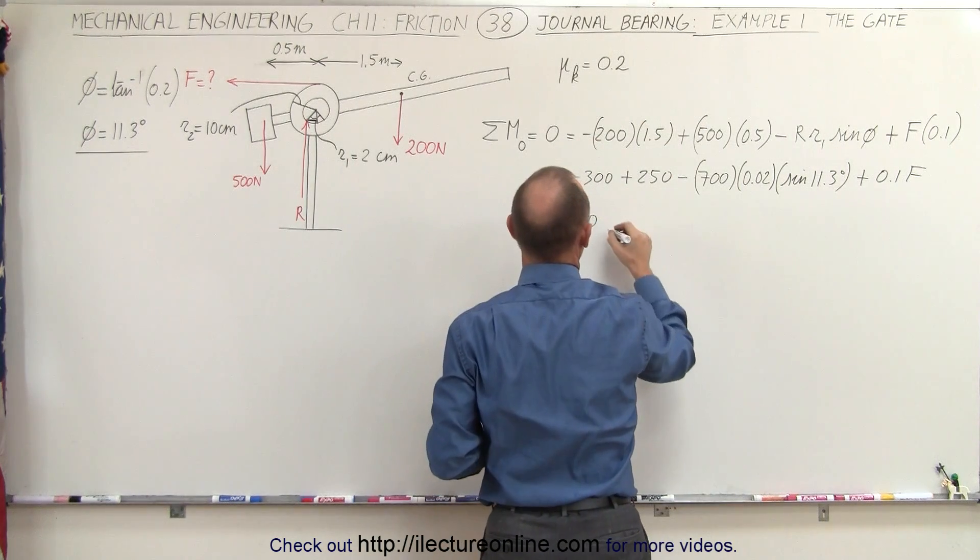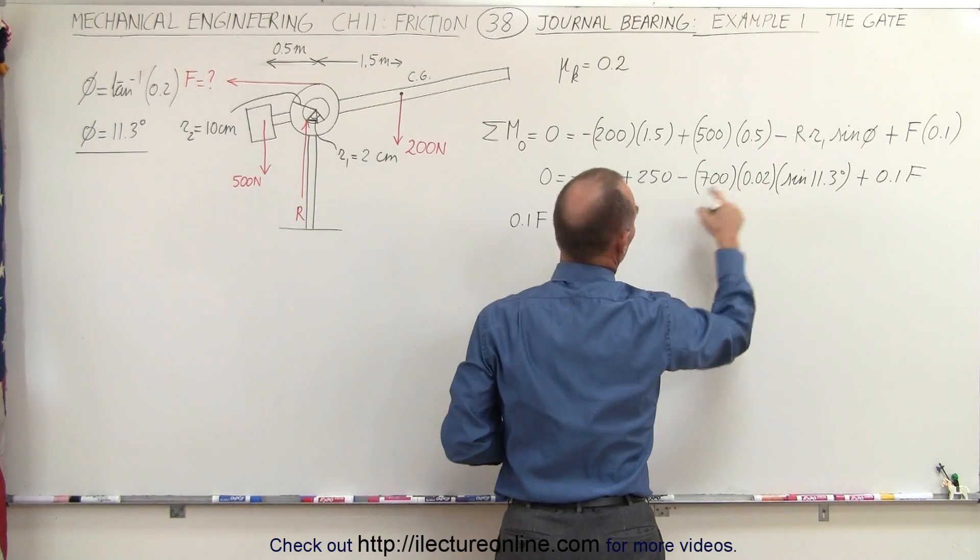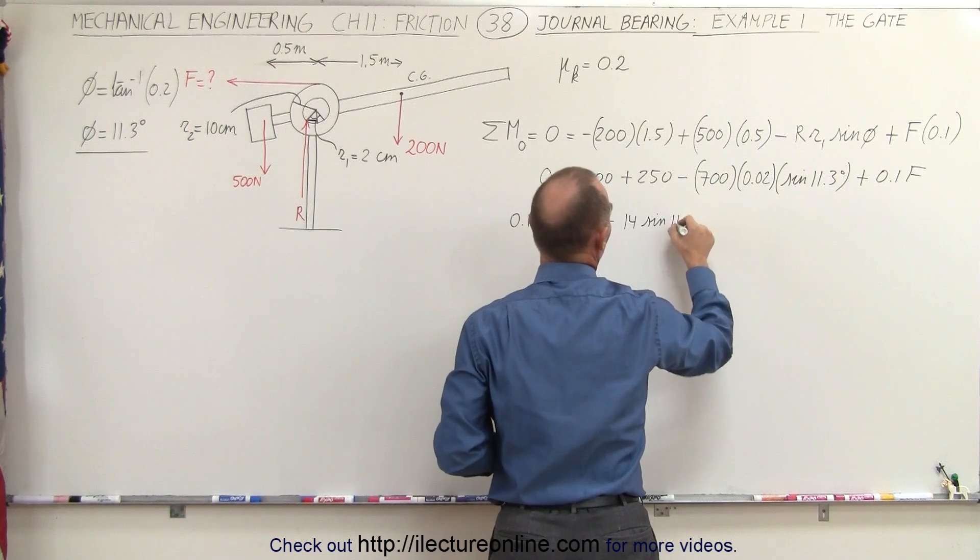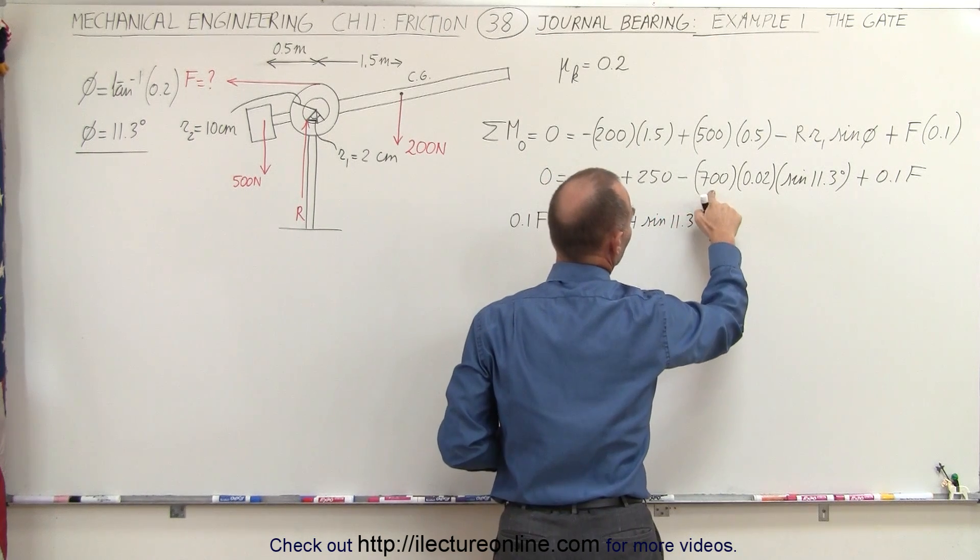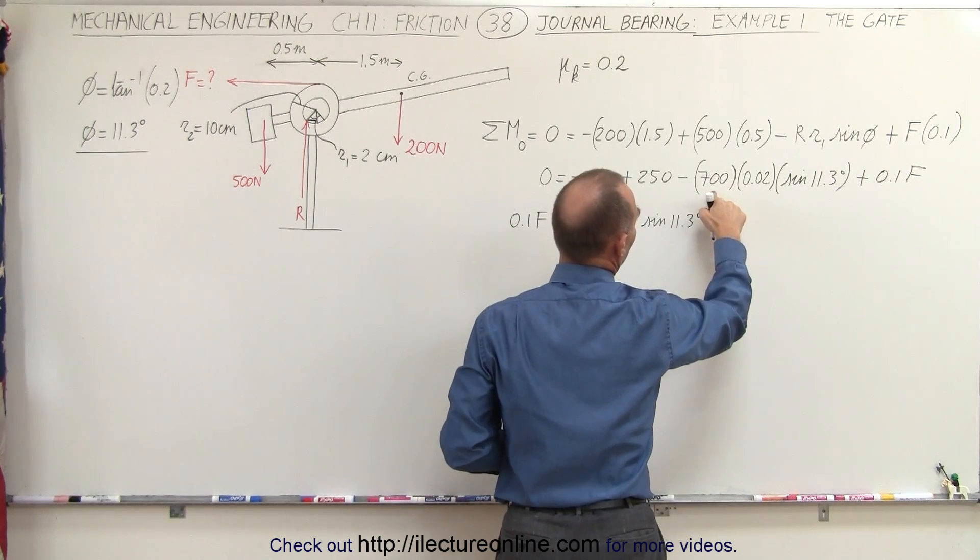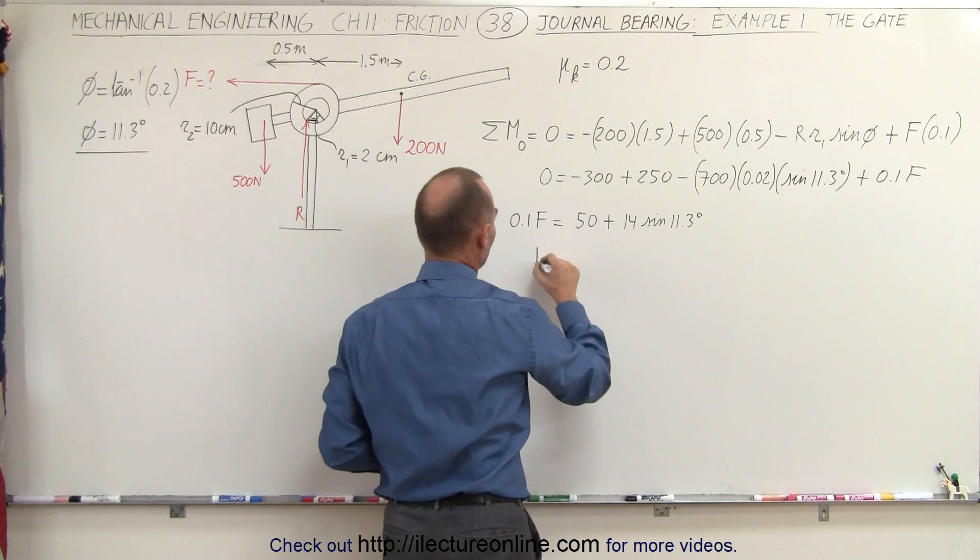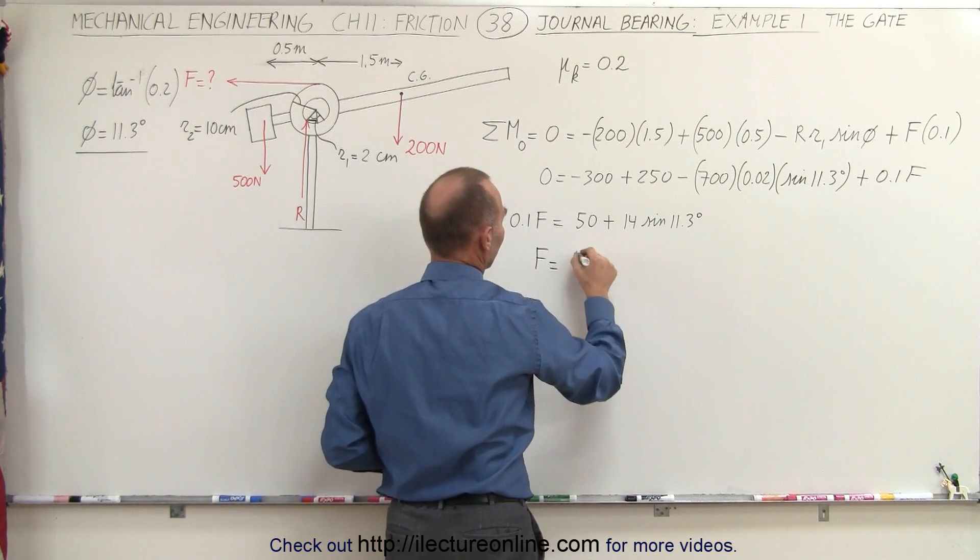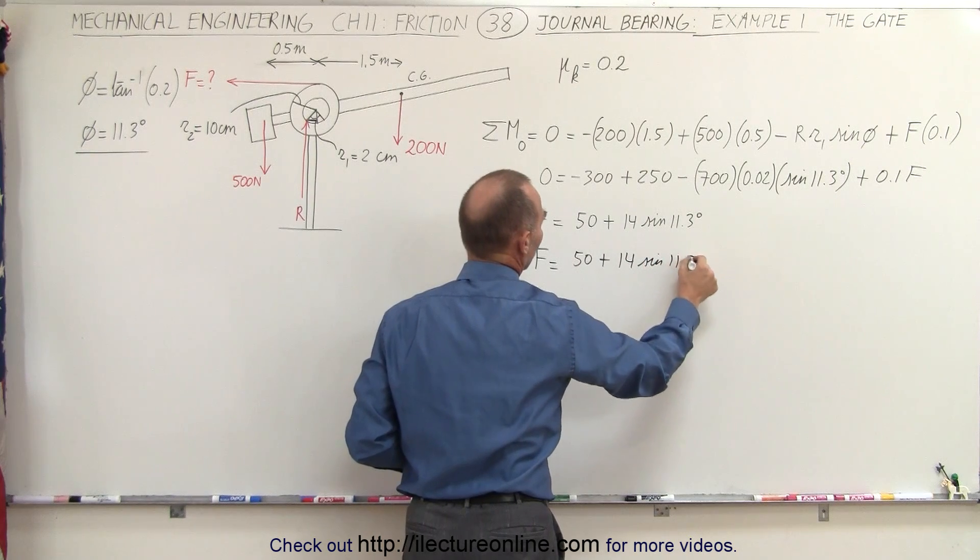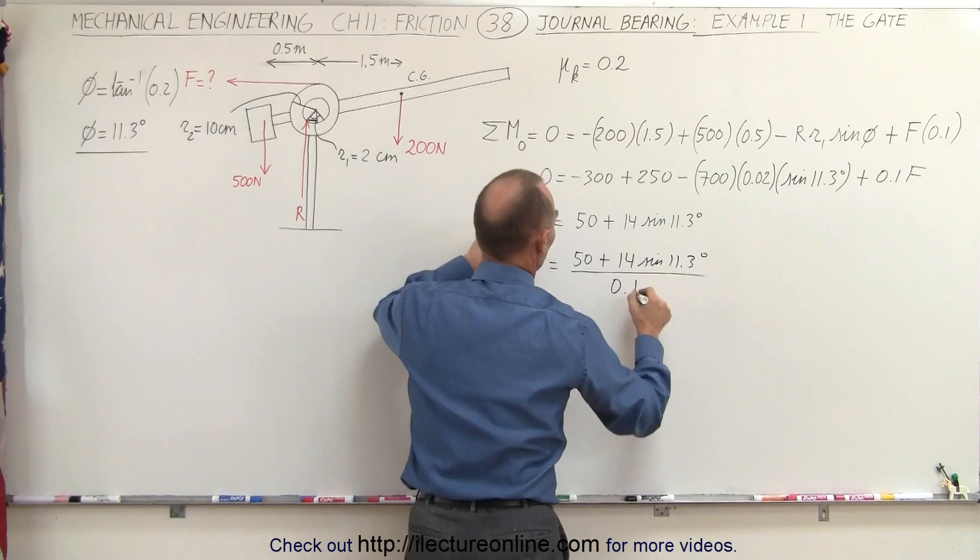And we have this which is minus, move to the other side becomes plus. So it'd be plus 14 times the sine of 11.3 degrees, that's 700 times 0.2. So now we can say that the force required F to open up the gate is 50 plus 14 times the sine of 11.3 degrees divided by 0.1.